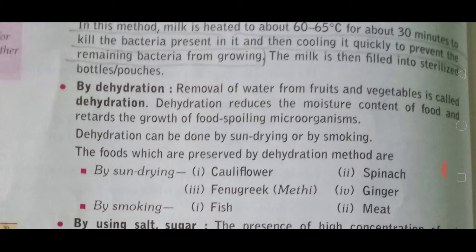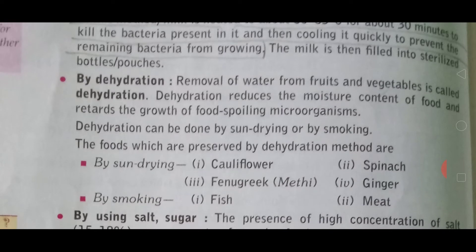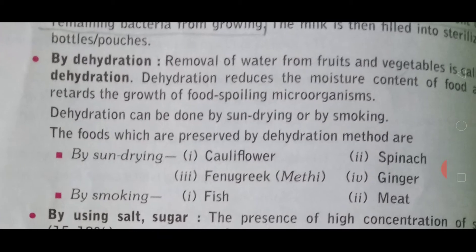Dehydration reduces the moisture content of food and retards the growth of food-spoiling microorganisms. Dehydration reduces the moisture inside the food, and this greatly retards the growth of food-spoiling microorganisms - almost stopping it. Dehydration can be done by sun drying or by smoking. These food materials - fruits and vegetables, also known as perishable food - are dehydrated using sunlight or smoke.